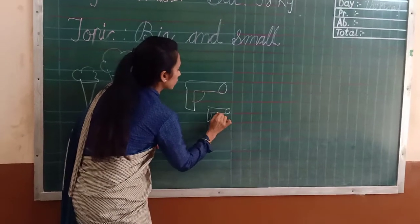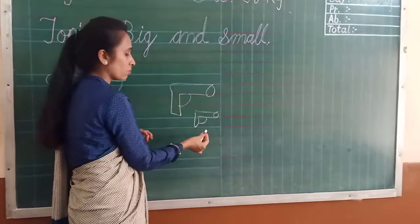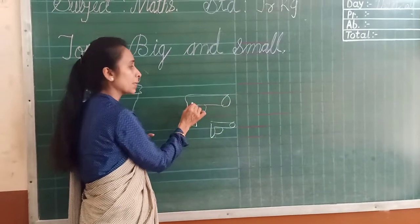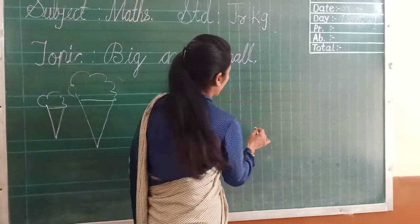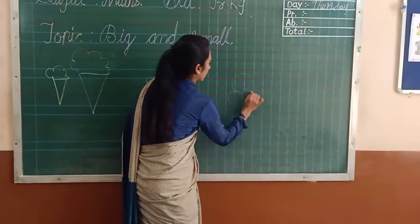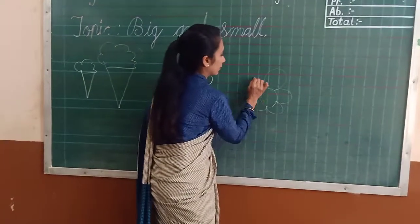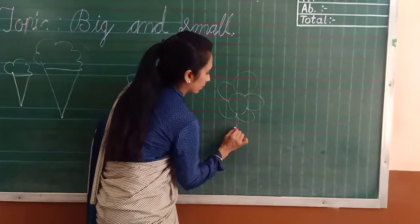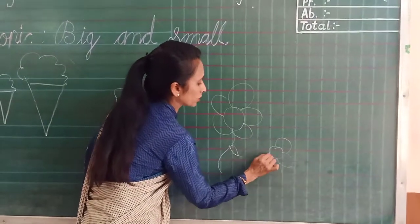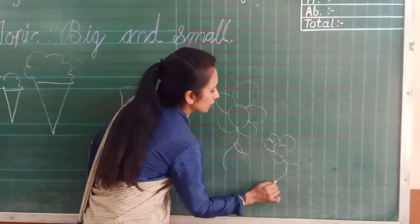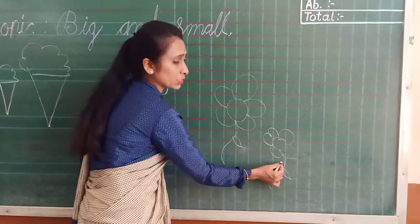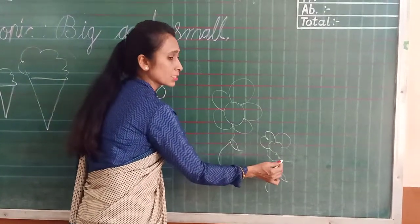In these two pictures, which one is small? Yes, this one is small and this one is big. Very good. In these two pictures, which one is small? Which one is big? Yes, this picture is big and this picture is small.